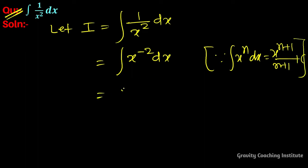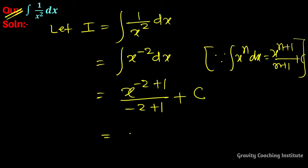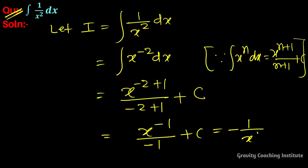So I equals x to the power minus 2 plus 1 upon minus 2 plus 1 plus C, which gives x to the power minus 1 upon minus 1 plus C. This simplifies to minus 1 upon x plus C, which is our required answer.